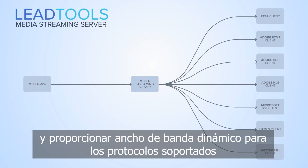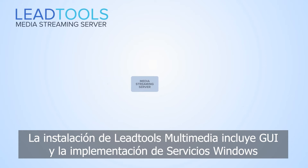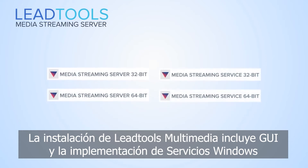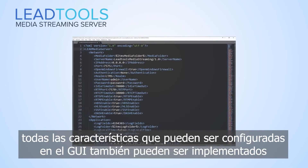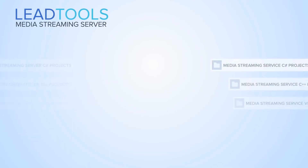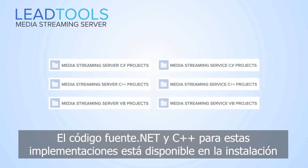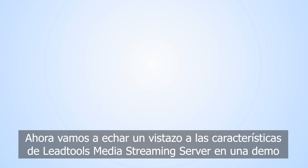With one source file, the media server SDK can support all of these clients and provide dynamic bandwidth for protocols that support it. The LEADTOOLS multimedia installation includes GUI and Windows service implementations. All of the features that can be set in the GUI may be set in the service implementation by editing an XML settings file. .NET and C++ source code for these implementations is available in the installation.